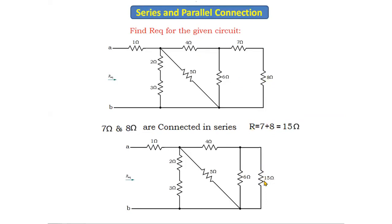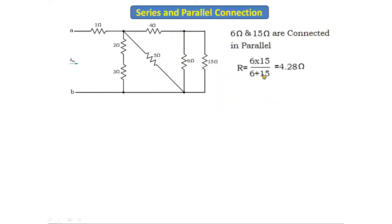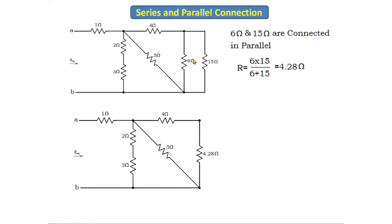Now the 6 ohm and 15 ohm are connected in parallel. Using the parallel formula R = (R1 × R2) / (R1 + R2), we get (6 × 15) / (6 + 15) = 4.28 ohms. We replace these two resistors with one single resistor of 4.28 ohms using the parallel operation.